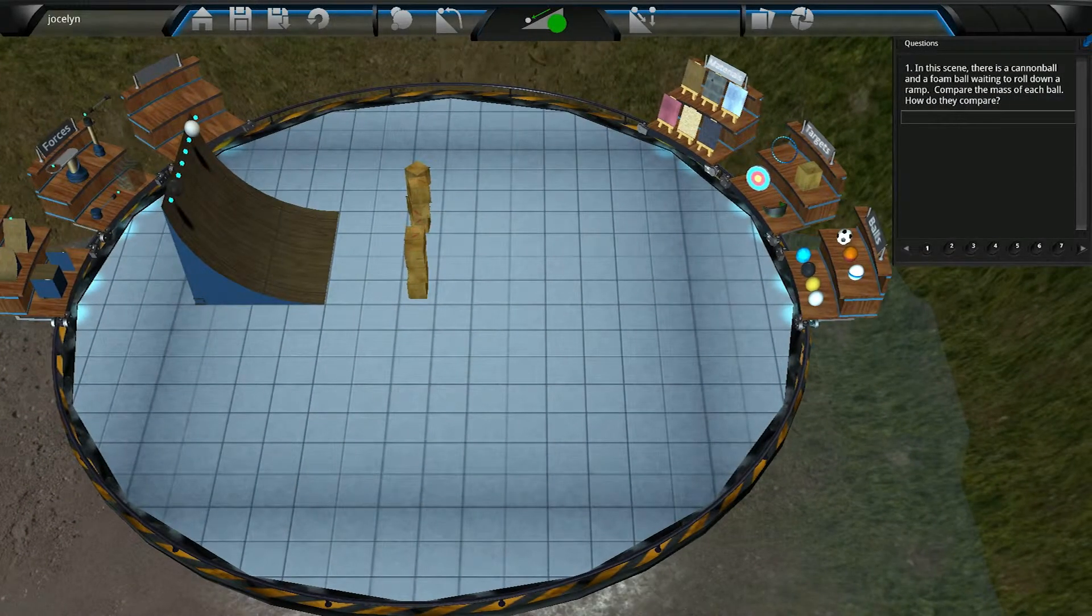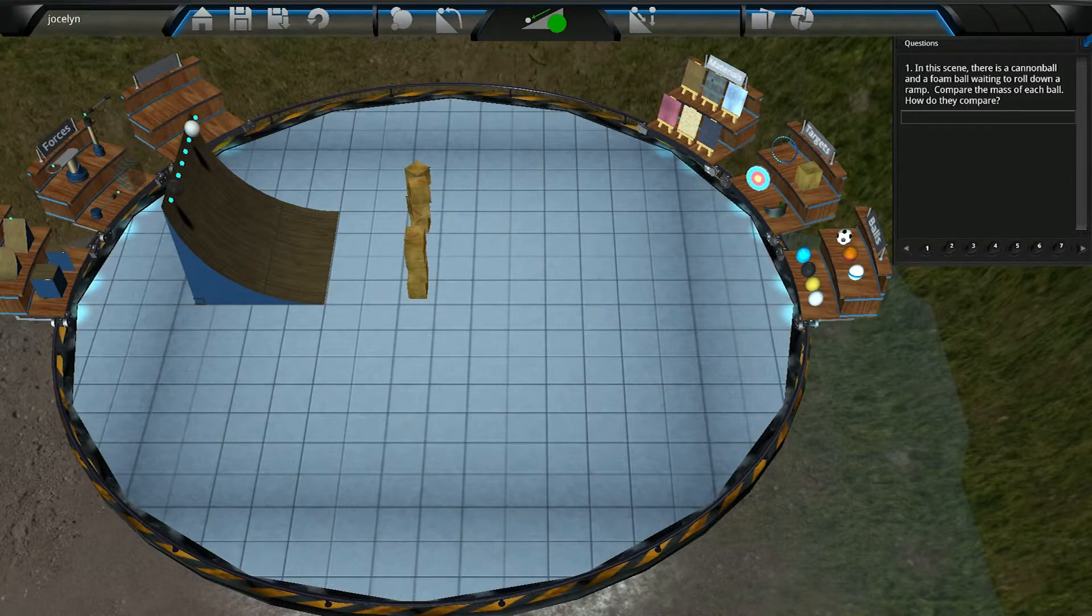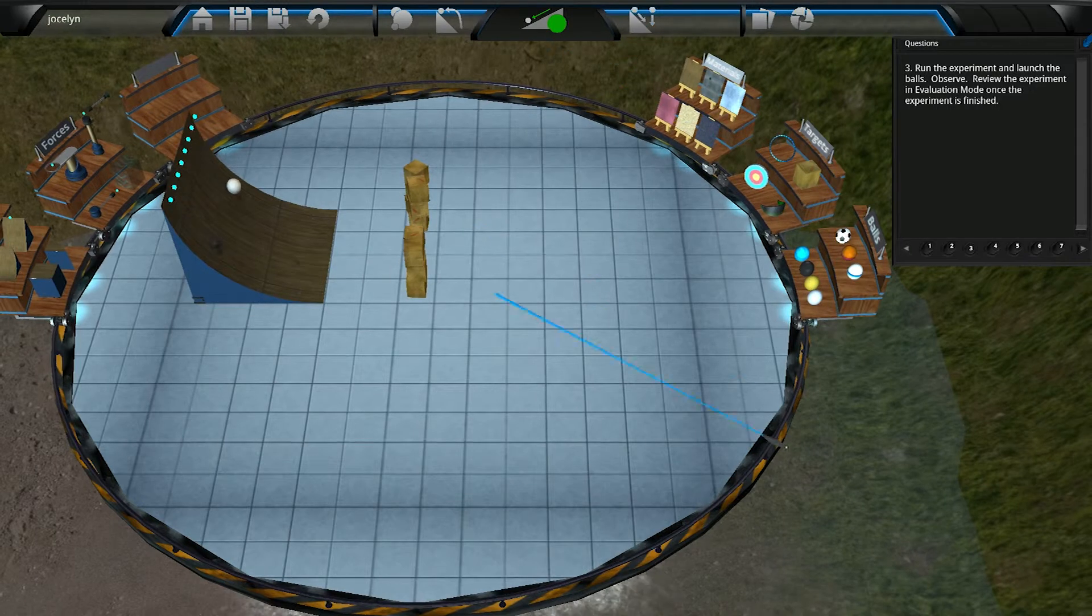When students open the Inertia in Action activity, they will see a preset environment with two balls on a ramp. They'll first record the masses of these two balls, launch them, and observe their motion.